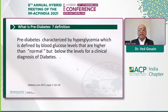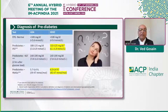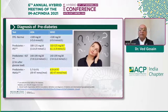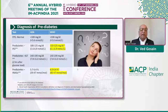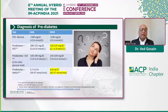Pre-diabetes is characterized by hyperglycemia, defined by blood glucose levels that are higher than normal but below the levels for a clinical diagnosis of diabetes. There is some disagreement in what makes the diagnosis of pre-diabetes. For impaired fasting glucose, the American Diabetes Association criteria is 100 to 125 mg/dL, whereas WHO and IDF use 110 to 125. For hemoglobin A1c, the ADA criteria is 5.7 to 6.4, whereas WHO and IDF use 6.0 to 6.4.